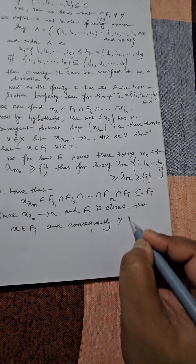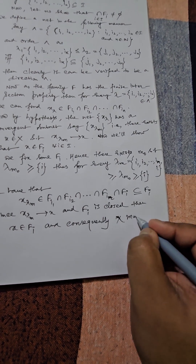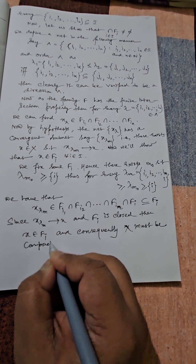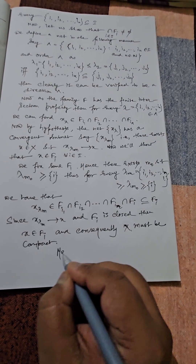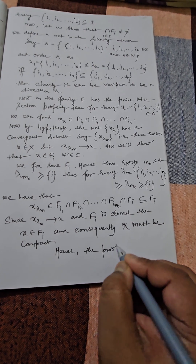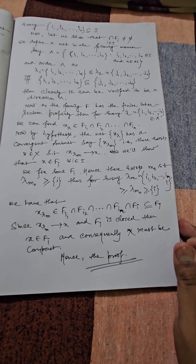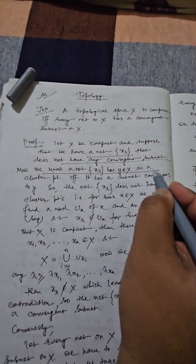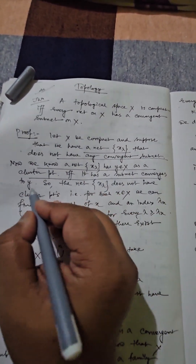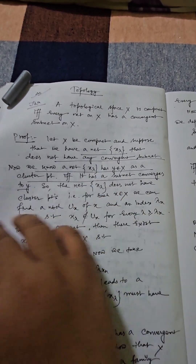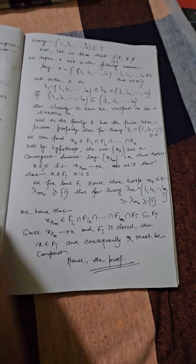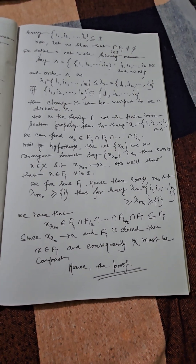Consequently, x must belong to the intersection of all F_i, so X is compact. This completes the proof. This is a very important result; I used the cluster point subnet equivalence as a standard result to prove this theorem — you can also try to prove that one. Prepare this theorem for your examination as it will be useful.